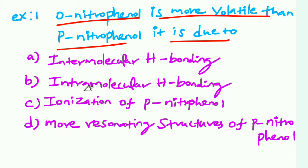Intermolecular hydrogen bonds versus intramolecular hydrogen bonds affect ionization and resonating structures. Paranitrophenol has more resonating structures.